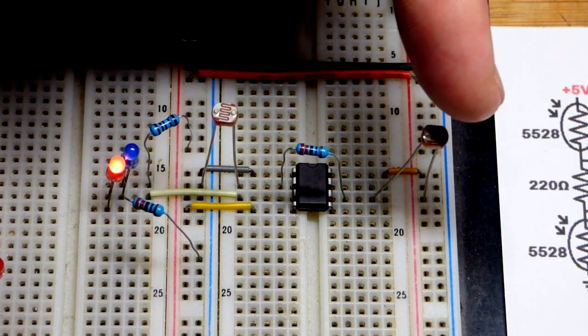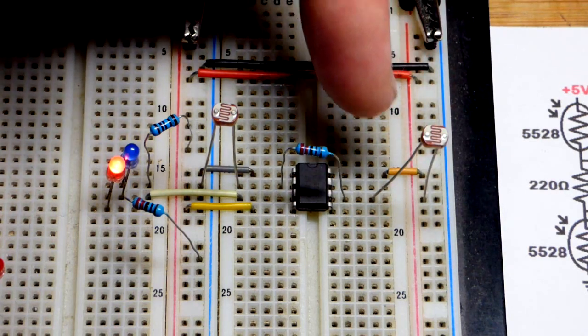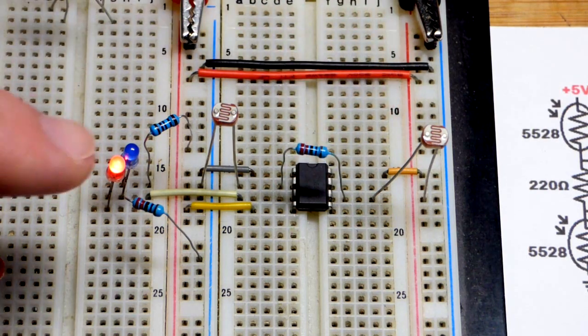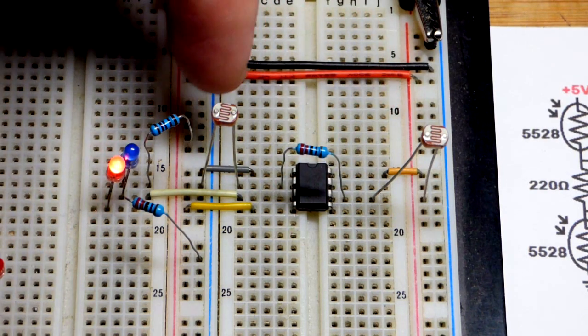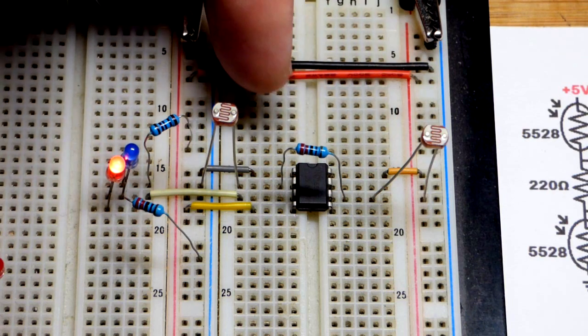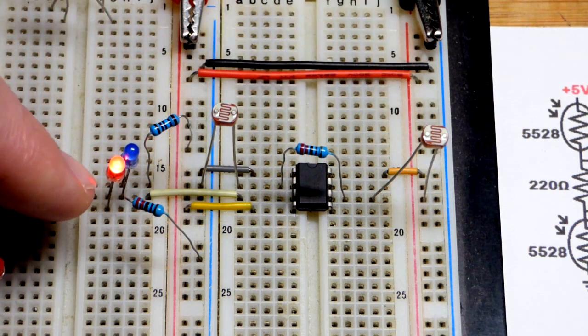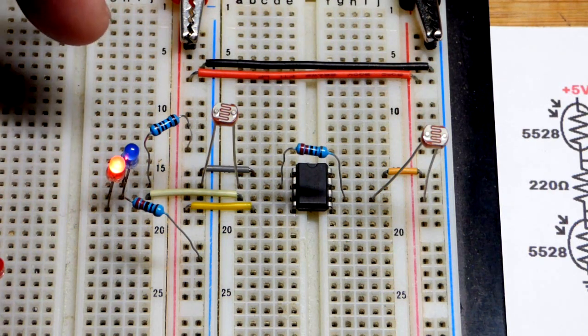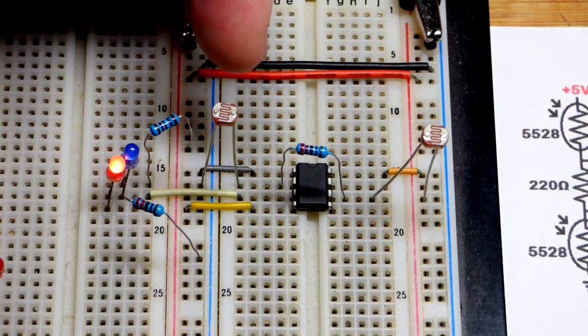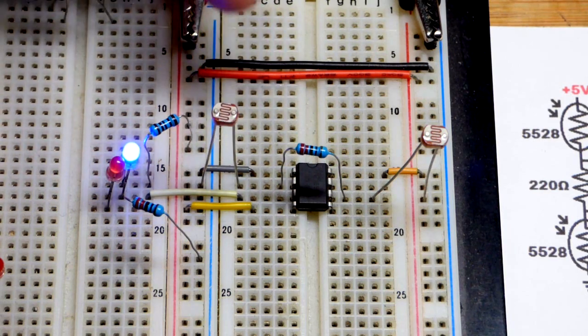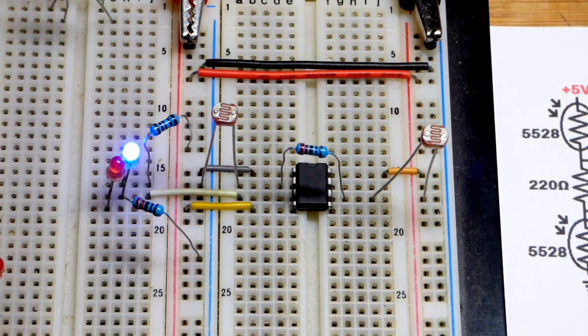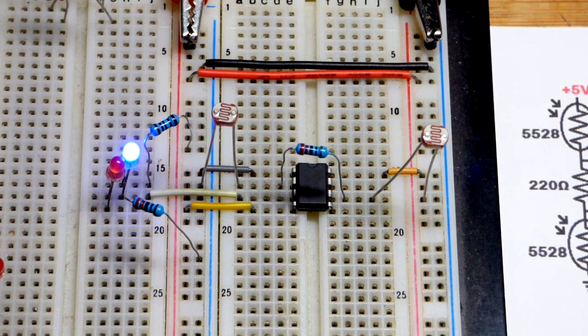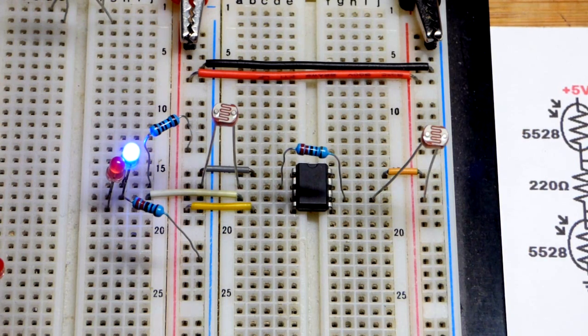To set the output high I'm going to shade the light dependent resistor that goes to the positive supply. There, you can see that set the output high, but when the light level got equal again it didn't go back to low, it stayed high. That's why it's a Schmidt trigger. When they're equal it stays in the last state you put it into. Now we're going to shade the light dependent resistor that goes to ground and it goes back to low again. When it's equal it stays in that state of low.